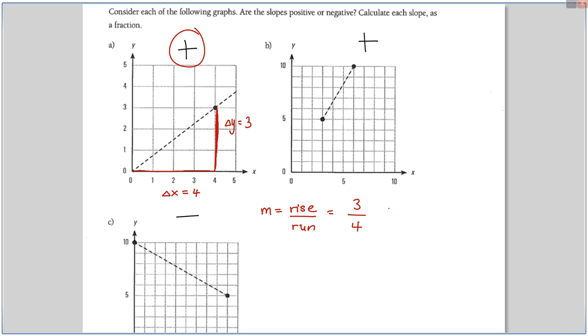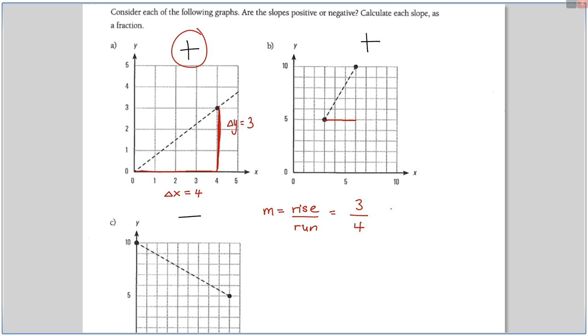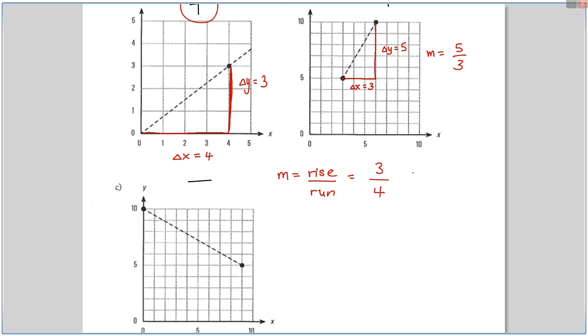Next one, start at the point here, and go over, and go up. So, what is delta x? Delta x is three, and delta y is five. So, the slope for this one would be rise over run, five over three. And it's positive, we already agreed on that.